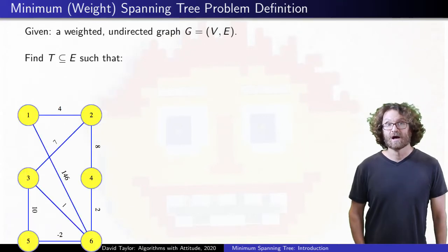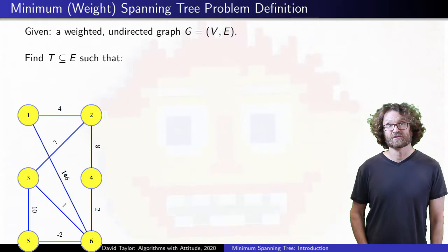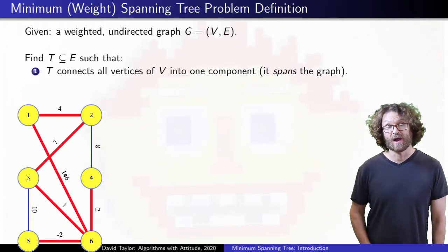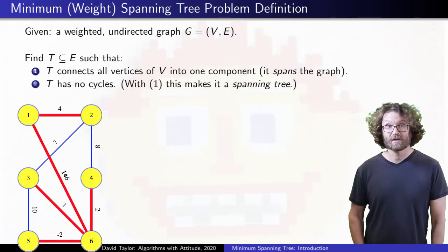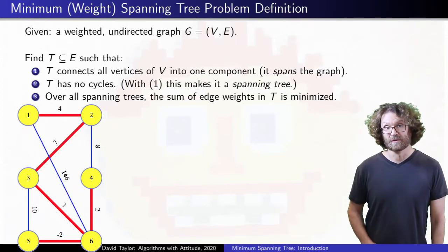You are given a weighted, undirected graph. Your goal is to find a subset of the edges that connect everything in the graph, they span the graph, they have no cycle, so they form a spanning tree, and the sum of their weights is minimized.